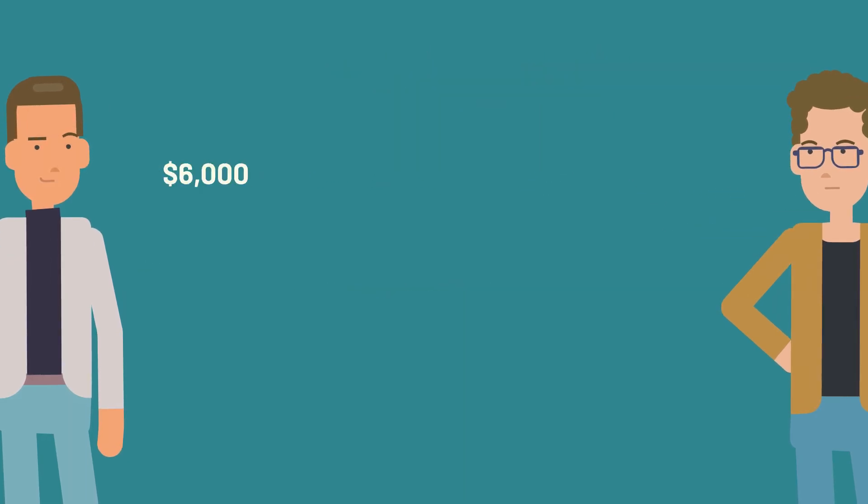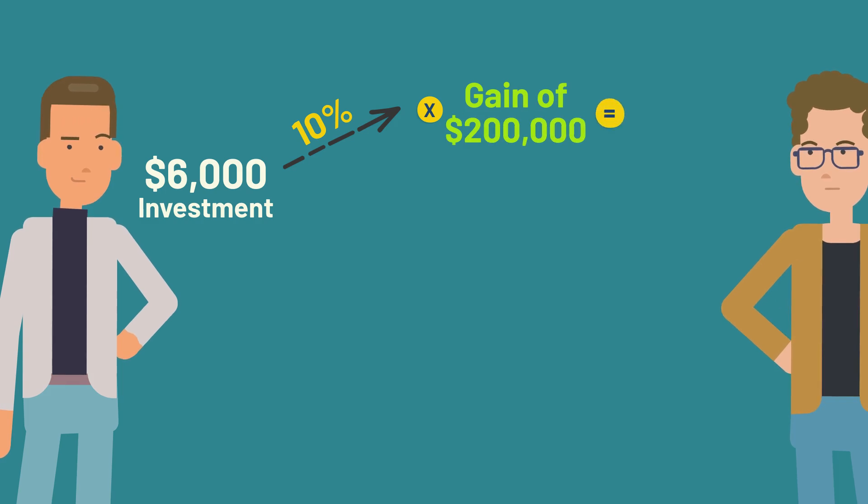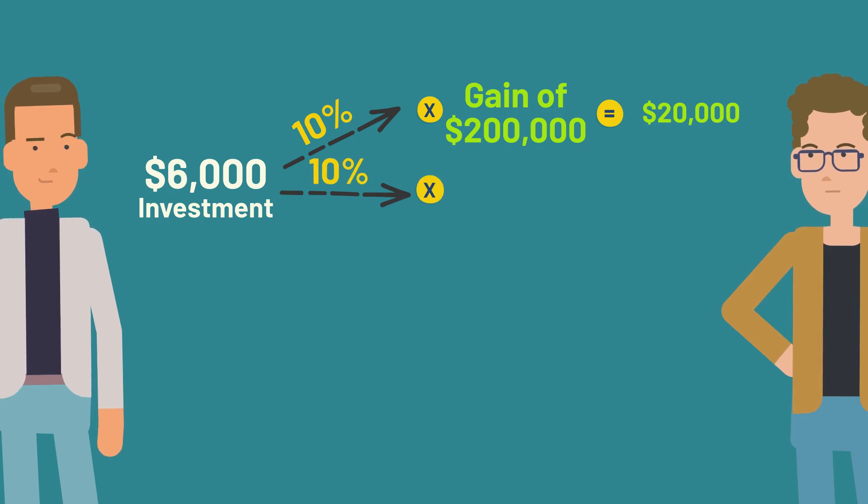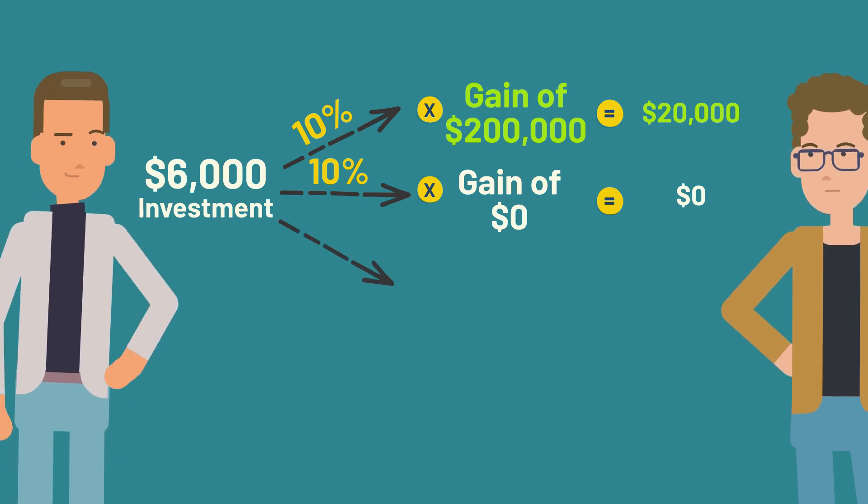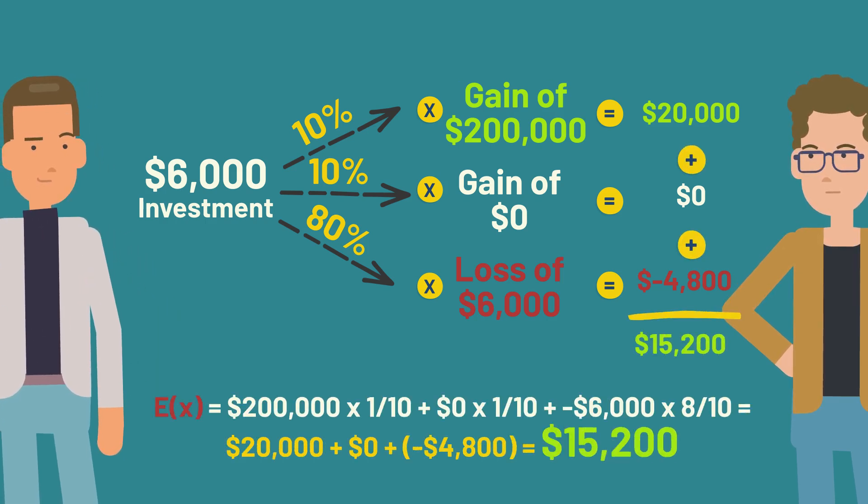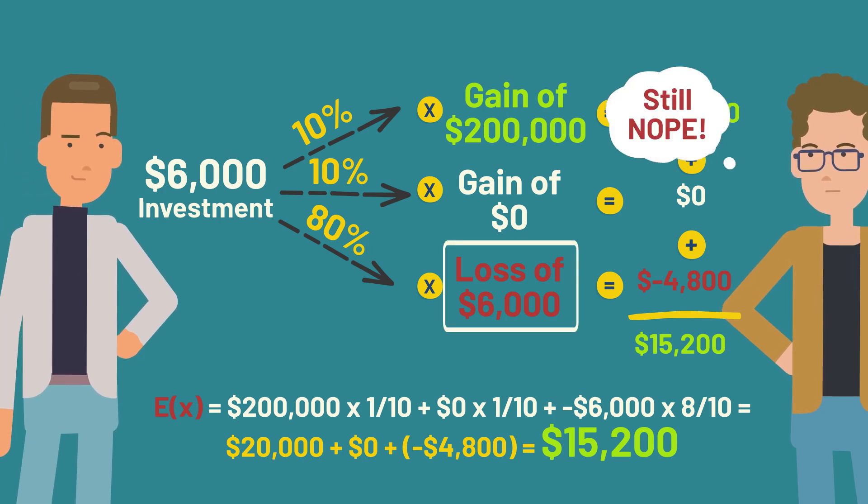Imagine a $6,000 investment with an estimated 10% chance of getting back your $6,000 plus a gain of $200,000, 10% chance of getting back your initial investment of $6,000 and coming out even, but an 80% chance of losing the entire $6,000. The expected value is $15,200, which is substantial, but you may not want to open yourself to the most likely outcome of losing $6,000.